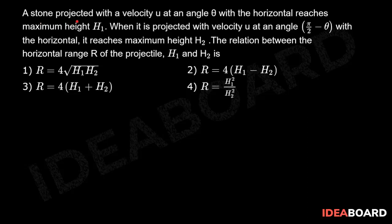A stone projected with a velocity u at an angle θ with the horizontal reaches maximum height h1. When it is projected with velocity u at an angle π/2 minus θ with the horizontal, it reaches maximum height h2. The relation between the horizontal range R of a projectile, h1, and h2 is: